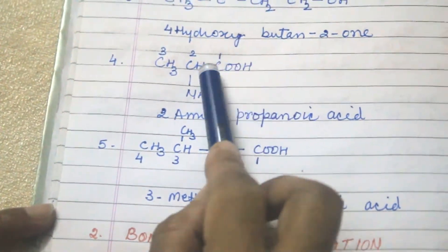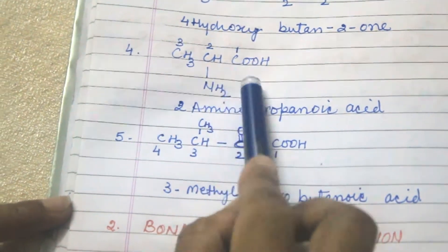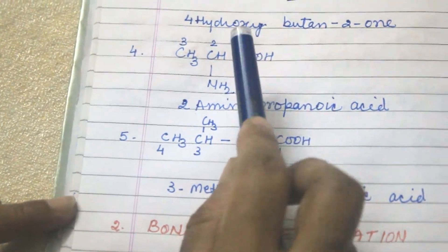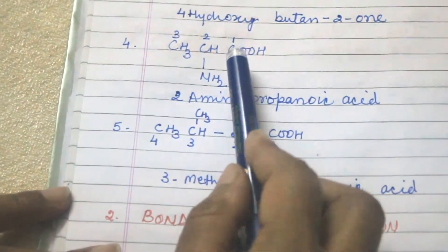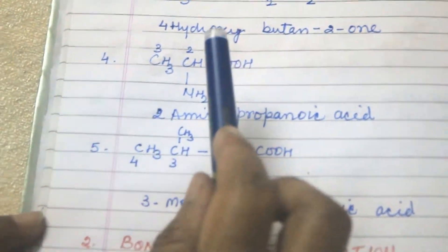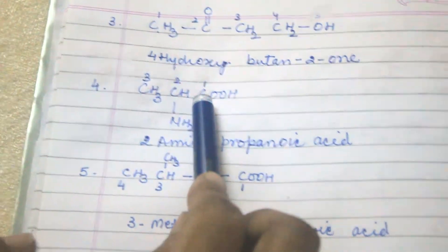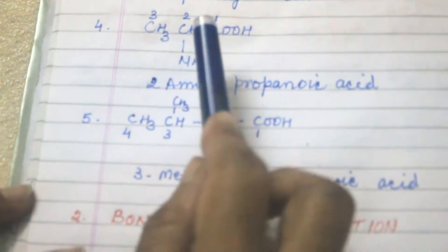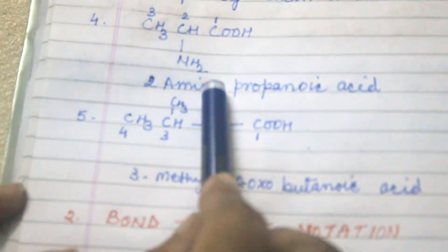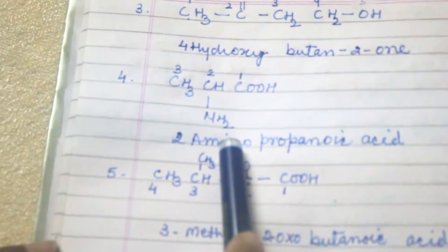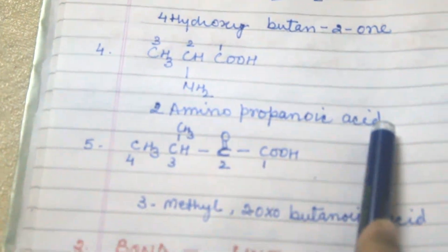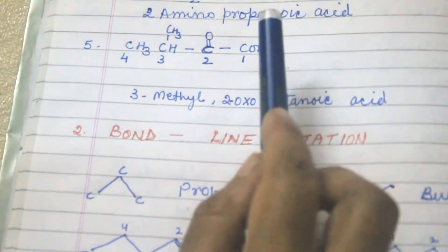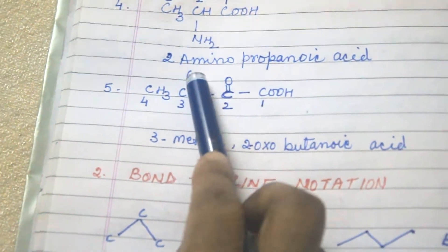Next example: the COOH group has more priority than the amine group, so we number from the COOH end. We count the functional group carbon in the main chain, giving us three carbons — propane. The amino group is at the second position, so the name is 2-aminopropanoic acid.